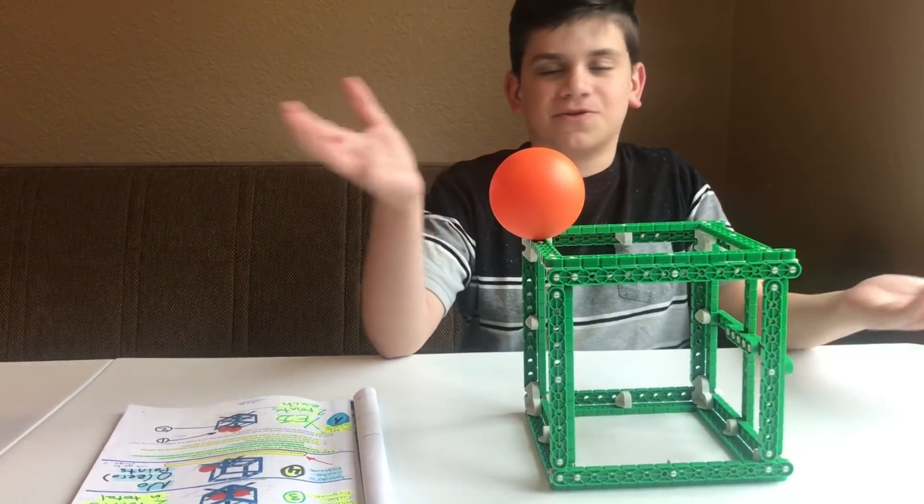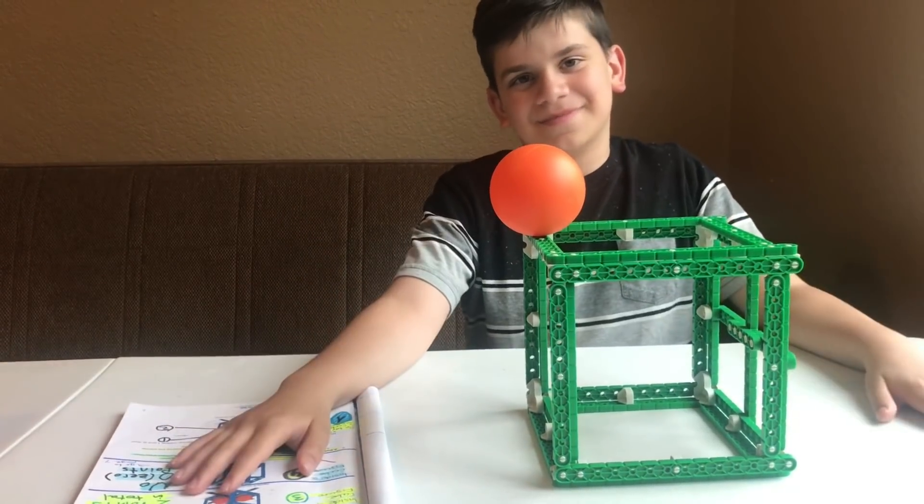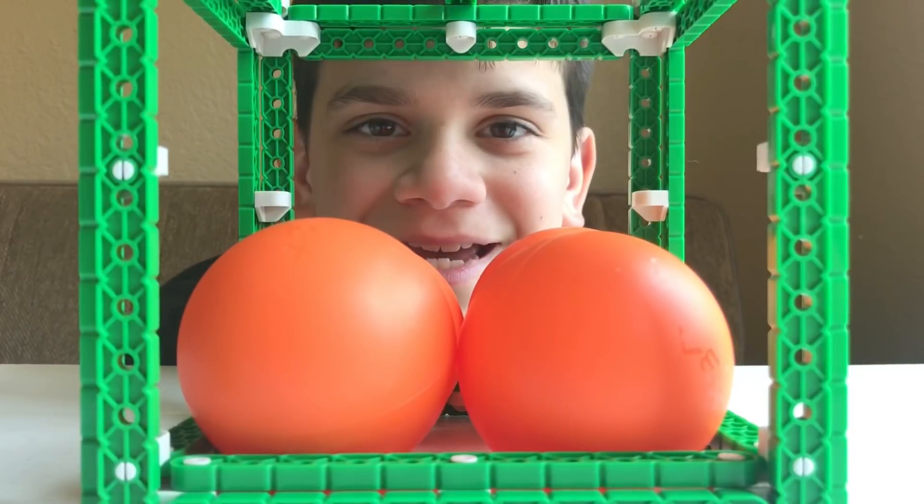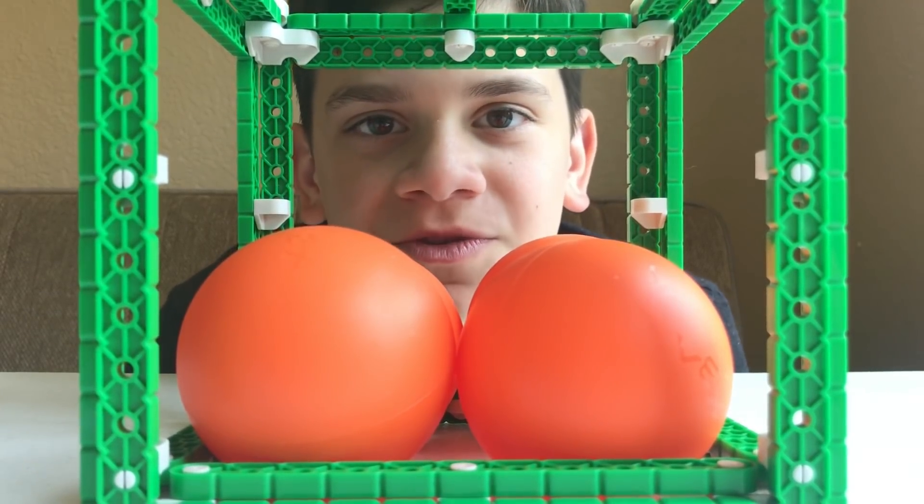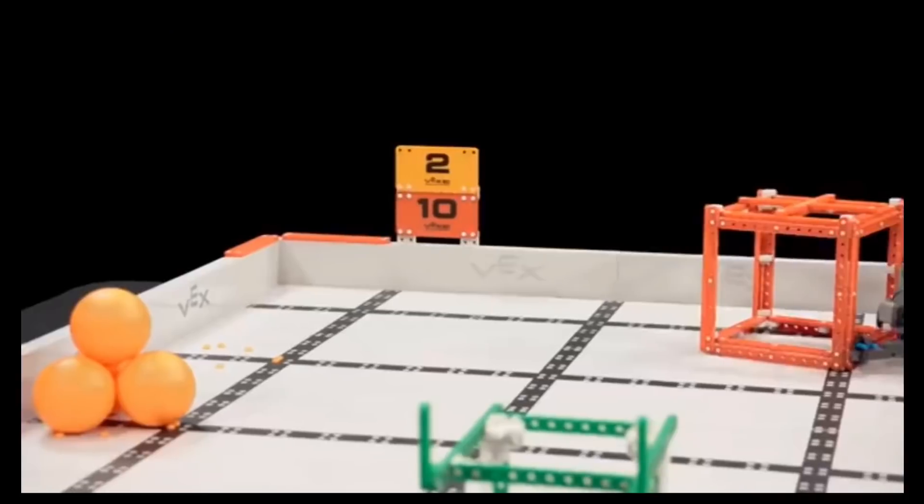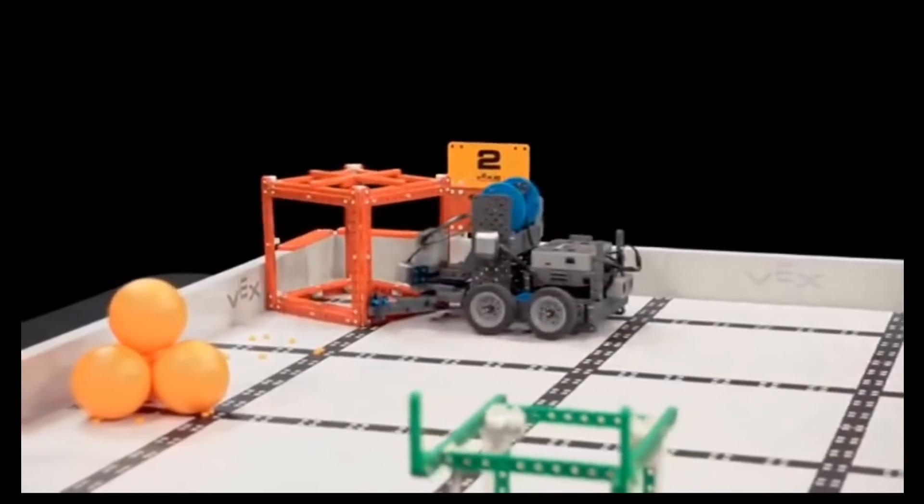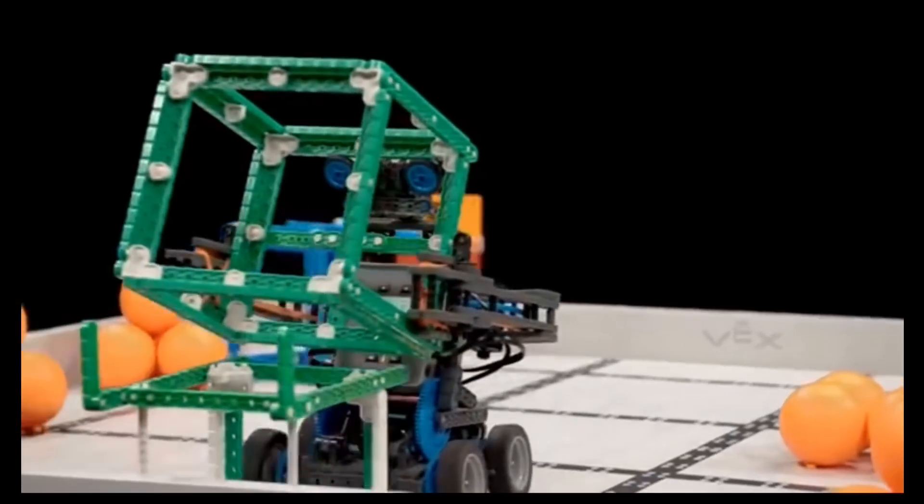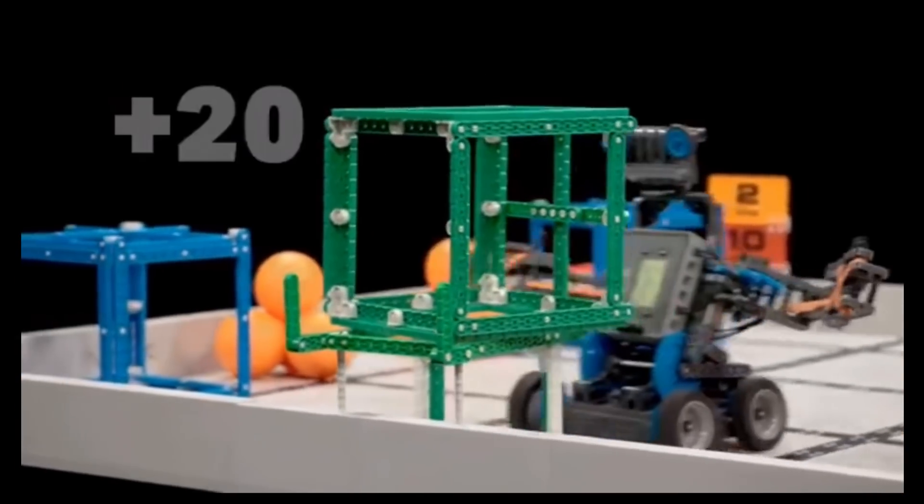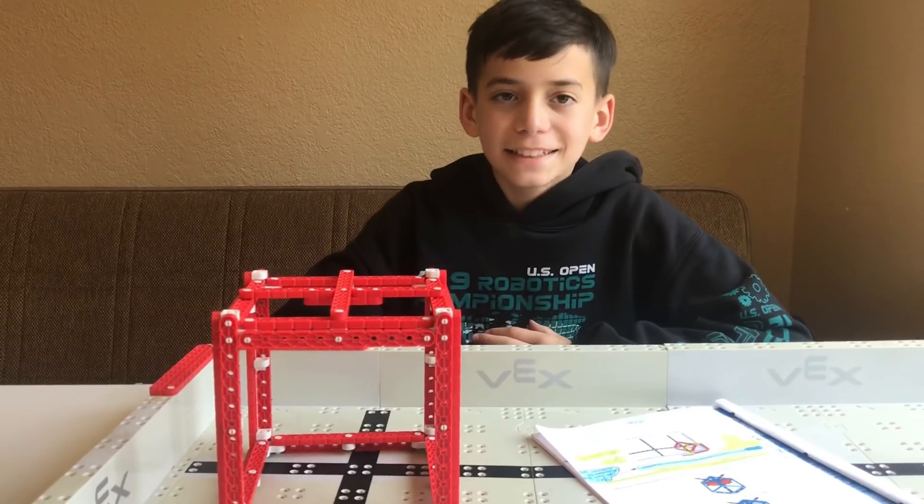Okay guys, that was the ball scoring. Now we're going on to the cube scoring. A red or blue cube scored in the same color scoring zone is worth 10 points, and a green cube scored on a platform is worth 20 points.